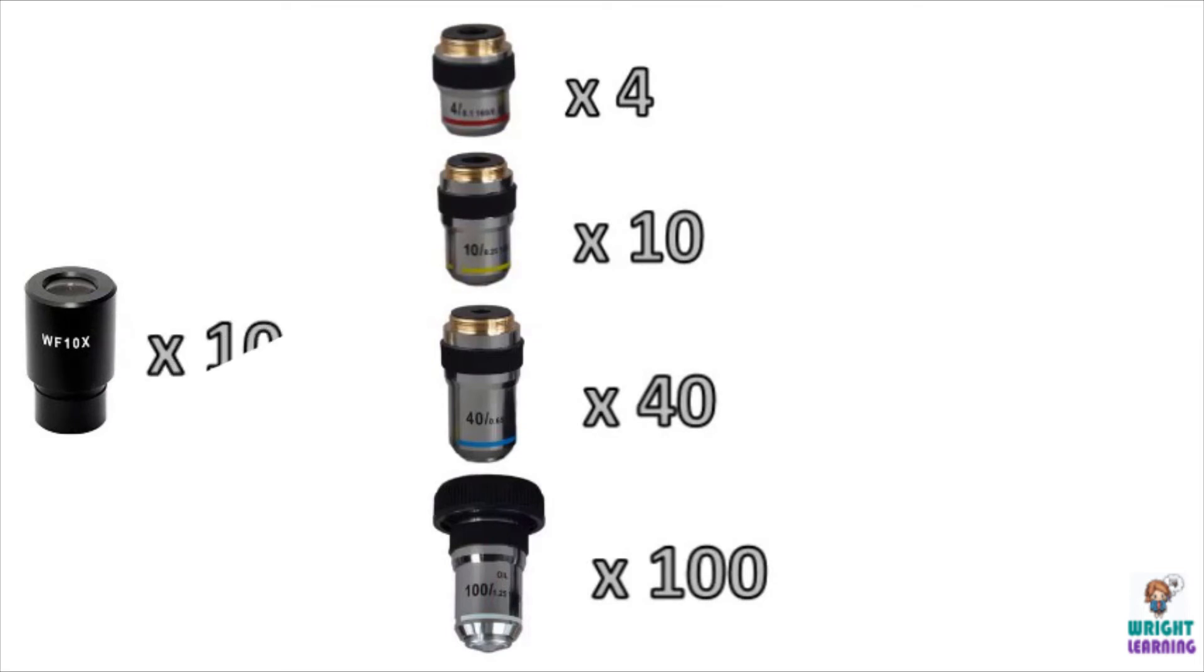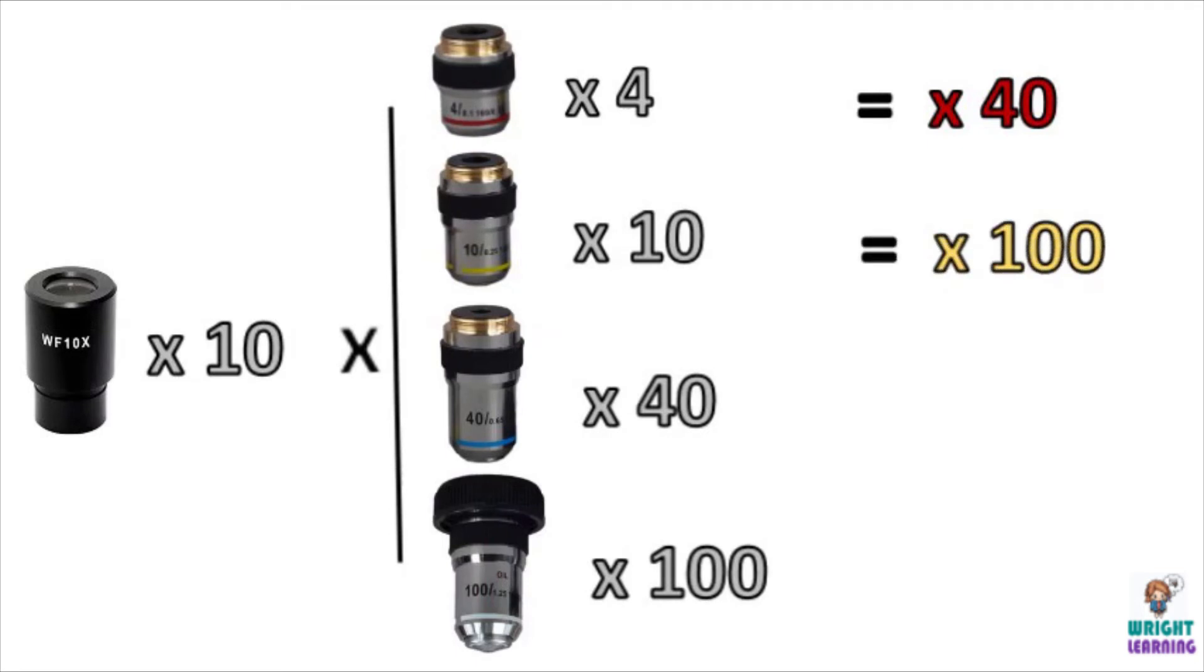So to get the total magnification that we're viewing our sample at, we need to multiply the power of the objective lens by 10. So the lowest magnification power we view our sample at is 40 times the size of the actual sample. The next objective lens allows us to magnify what we're viewing by 100 times. The next objective lens has a magnification power of 400, and finally the most powerful objective lens magnifies our sample 1000-fold.